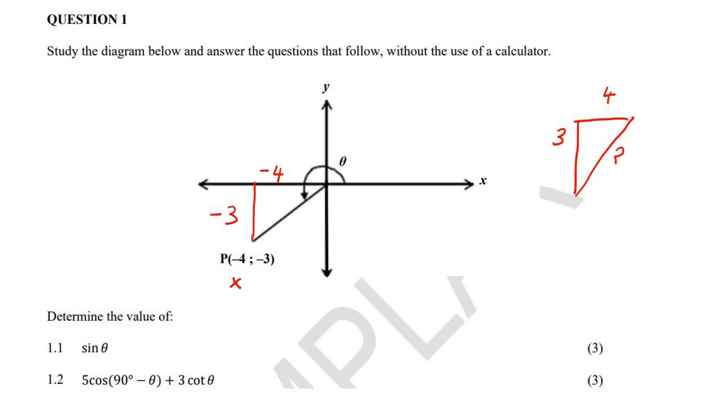And now we need to find this side over here by just using Pythagoras. So you can just say 4 squared plus 3 squared is equal to 25. And then the square root of 25 is 5. So this length here is 5. And you'll never make this length a negative. That length will always be a positive. Now that our triangle is solved, we can go solve these questions.